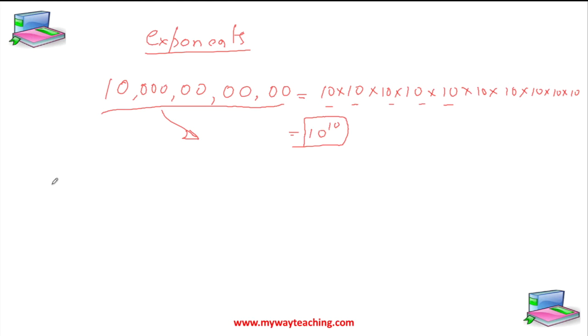Suppose you know the mass of the earth. The mass of the earth is 5, 9, 7, 0, then 0, then 0, then 0, 0, 0, and then 0. So this is the mass of the earth.